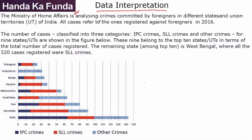The Ministry of Home Affairs is analyzing crimes committed by foreigners in different states and union territories of India. All cases refer to the ones registered against foreigners in 2016. The number of cases are classified into three categories — IPC, SLL, and other crimes — for nine states and union territories as shown in the figure below.